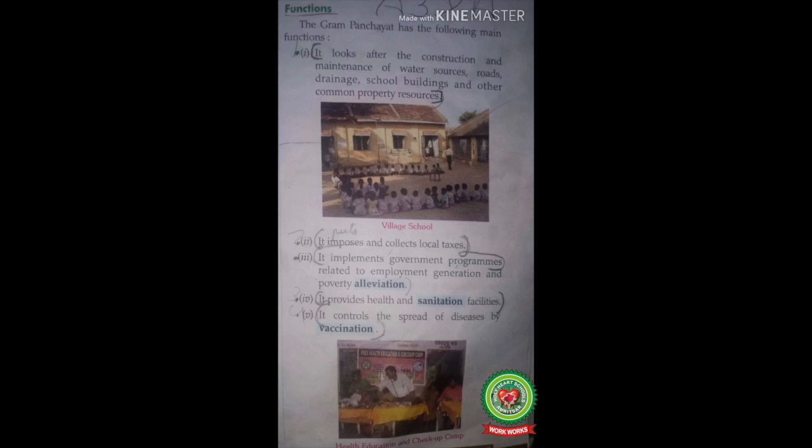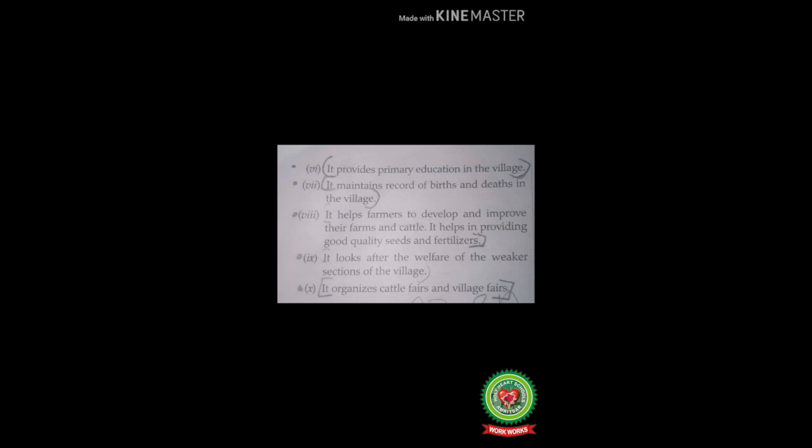Number four: it provides health and sanitation facilities — 'sanitation' means conditions relating to public health, particularly the provision of clean drinking water and adequate sewage disposal. Number five: it controls the spread of diseases by vaccination — 'vaccination' means a process of providing immunity against a disease. Number six: it provides primary education in the village — gram panchayat opens primary schools and encourages parents to send their children to school. Number seven: it maintains records of births and deaths in the village.